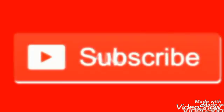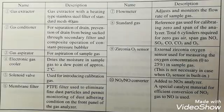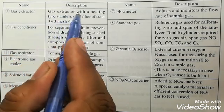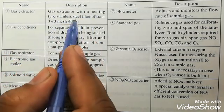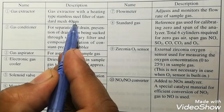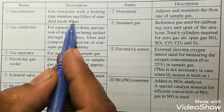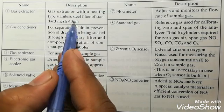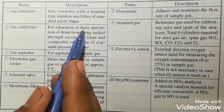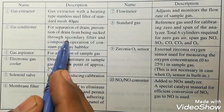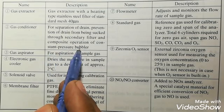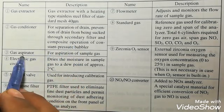So now I will tell you what are the main purposes of all these components. As you can see, this is the gas extractor with a heating type stainless steel filter of standard mesh of 40 micrometers, so it will filter out any particle which is up to 40 micrometers. This is the function of the gas extractor: it has a heater and a filter. The gas conditioner is for separation of drain and prevention of drain from being sucked through secondary filter and composite operation of constant pressure bubbler.